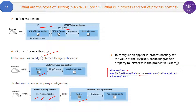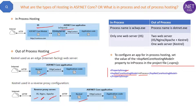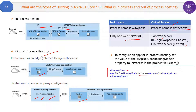Otherwise, by default, it will always follow the out-of-process hosting model. To summarize the differences: in in-process hosting, the process name is w3wp.exe, while in out-of-process hosting, the process name is dotnet.exe. In in-process, only one web server is used; in out-of-process, two web servers are used — one is always Kestrel, and the second can be IIS, Nginx, or Apache. We will discuss Kestrel further in an upcoming question.